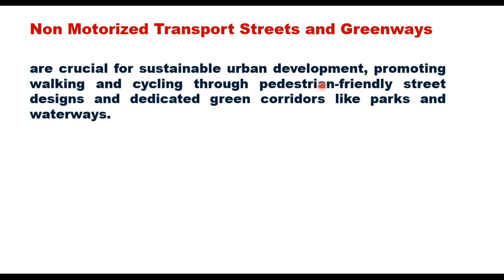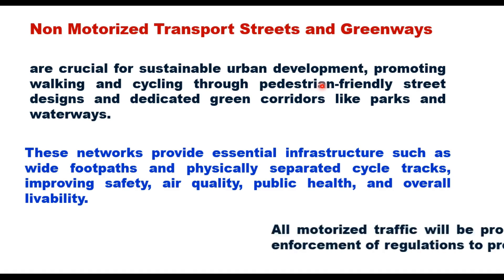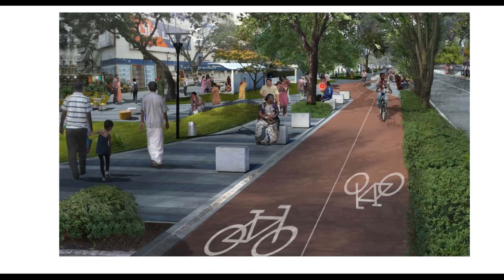Non-motorized transport streets and greenways are crucial for sustainable urban development, promoting walking and cycling through pedestrian-friendly street designs and dedicated green corridors like parks and waterways. These networks provide essential infrastructure such as wide footpaths and physically separated cycle tracks, improving safety, air quality, public health, and overall livability. All motorized traffic may be prohibited on non-motorized transport streets using barriers and enforcement of regulations. If motorized traffic must be permitted, a separate area should be provided for those vehicles.